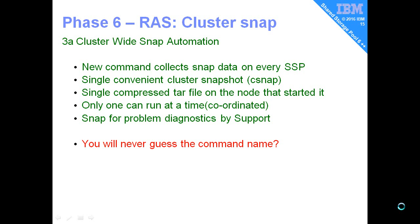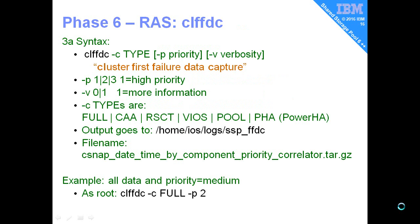You're never going to guess the name of the command — CSnap would have been too obvious. It's CLFFDC, for First Failure Data Capture. We have some options: Priority says how fast it will engage in getting the data — don't use Priority 1 on production machines. You can also specify with the minus C option which parts of the system you want data from; full is going to be the default most of the time. The data ends up in /home/ios/logs/SSP_FFDC directory, and the filename will be a CSnap with the date and time, component, priority, and a correlator that increments every time we run a CSnap.